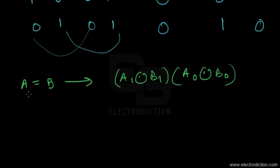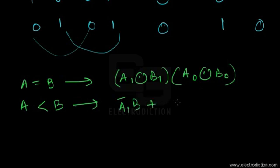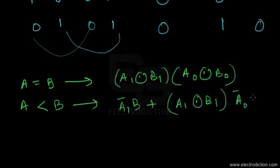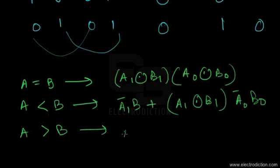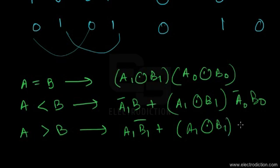For the condition where A is less than B, the expression is: Ā1·B1 + (A1 XNOR B1)·Ā0·B0. For the condition where A is greater than B, the expression is: A1·B̄1 + (A1 XNOR B1)·A0·B̄0. These are the three boolean expressions for each of the three output conditions of the two-bit magnitude comparator.